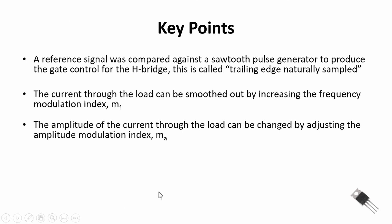Let's recap the key points. For this H-bridge, it was called trailing edge naturally sampled — one of the easier PWM configurations for introduction to PWM inverters. We compared a reference signal against a sawtooth pulse generator to control the H-bridge. We looked at two parameters: the frequency modulation index M sub f, which smoothed out the current through our load by increasing it; and the amplitude modulation index M sub a, which allowed us to change the amplitude of the current. We can control both output frequency and amplitude simply by adjusting our reference voltage — and that's very powerful.